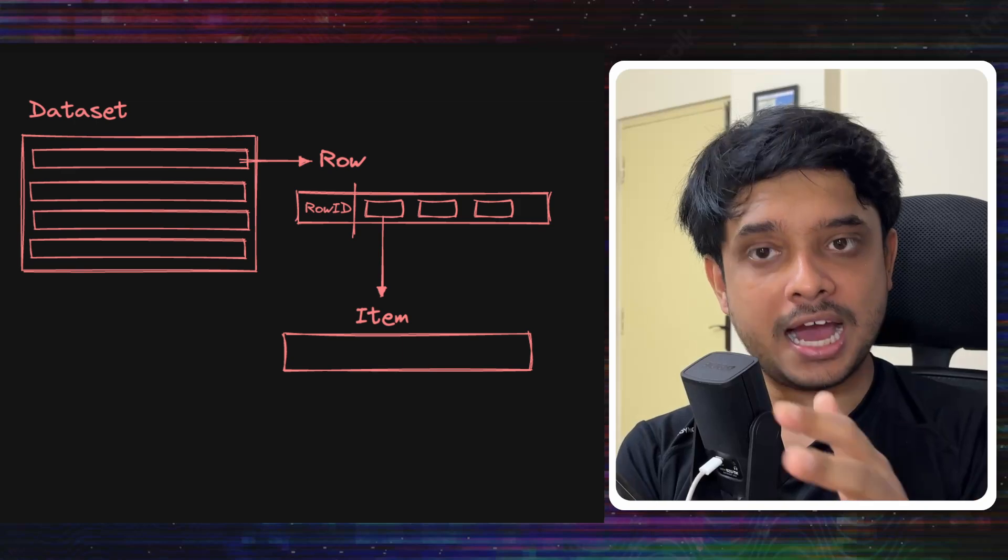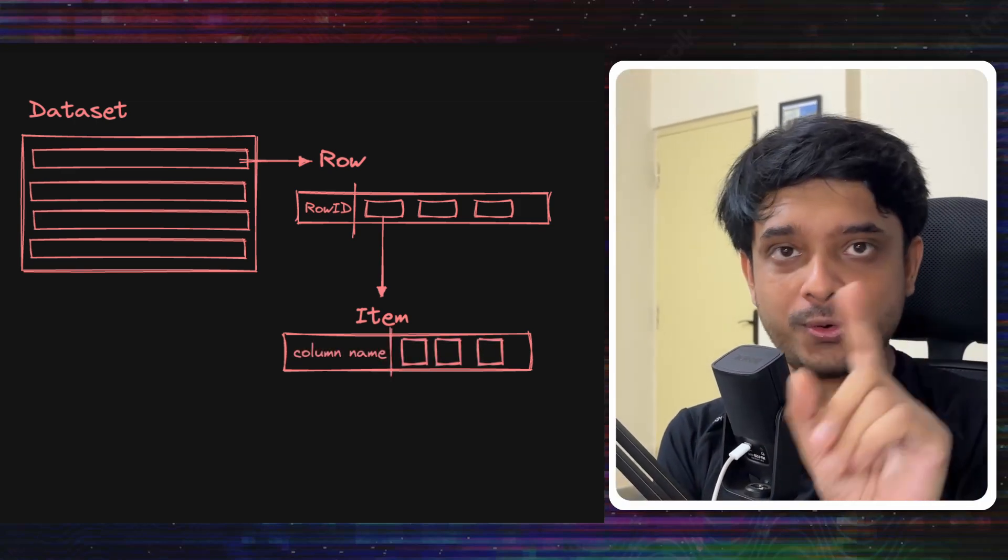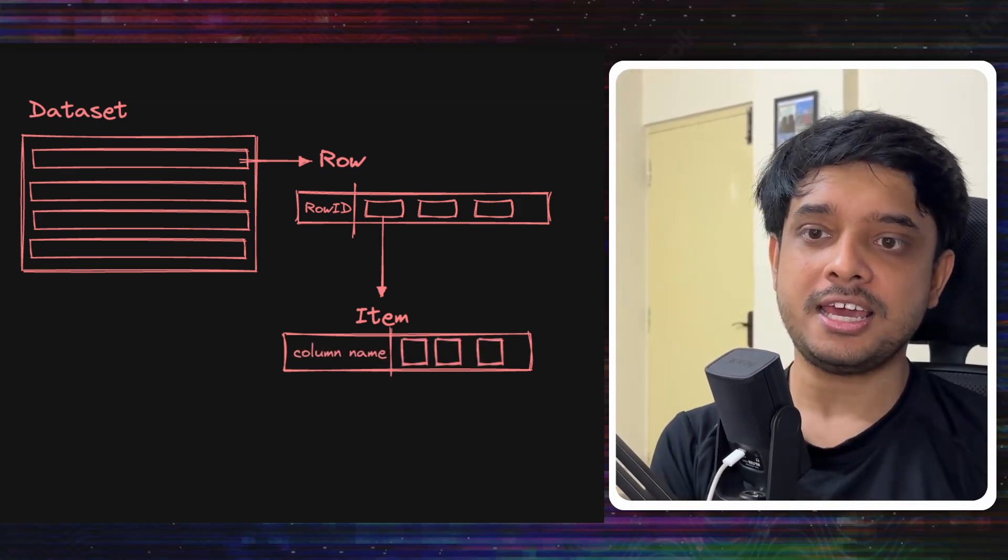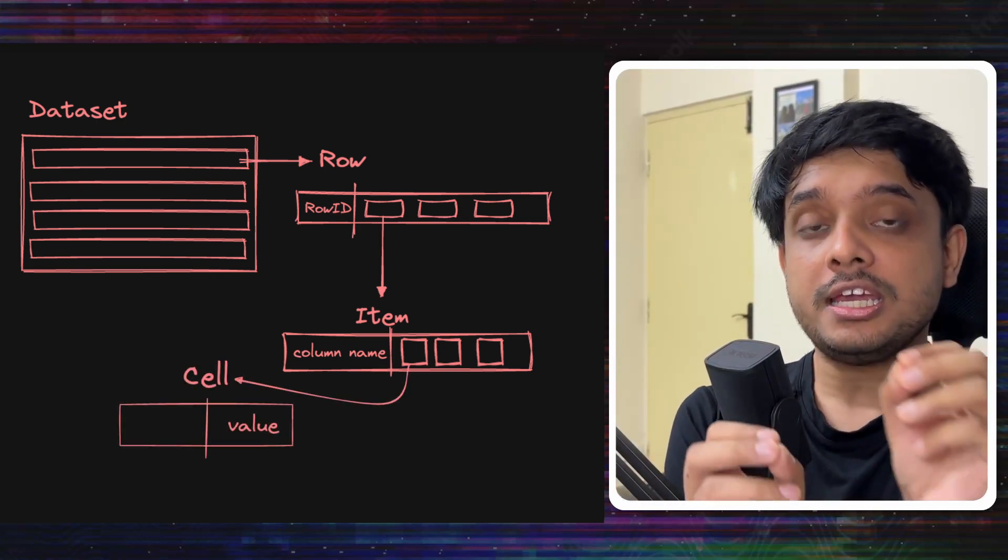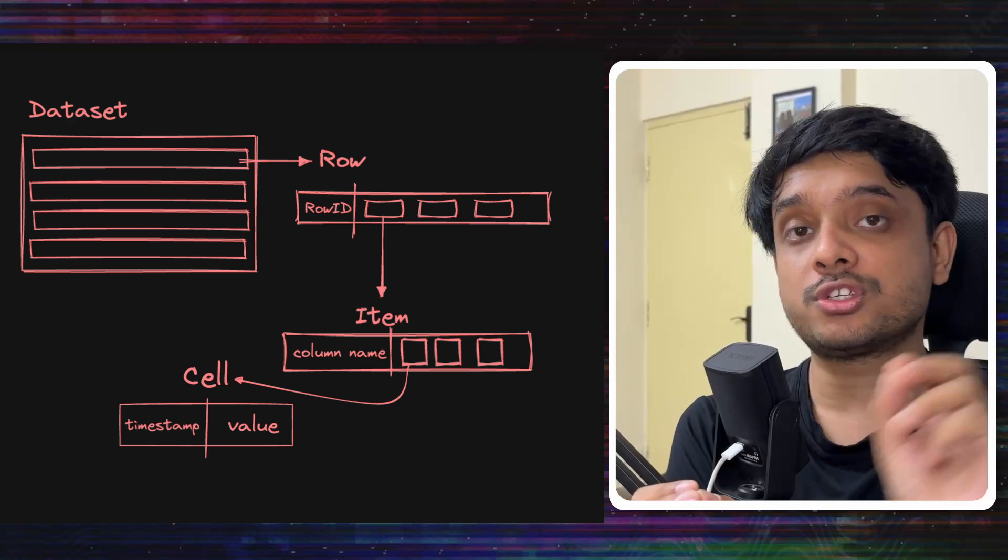Now each row is constituted of many items. Each item has a column name and a list of cells. Now here is something interesting. Each cell not only has the value, it also has a timestamp associated with it.